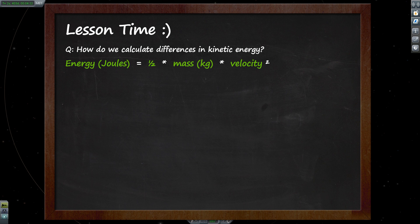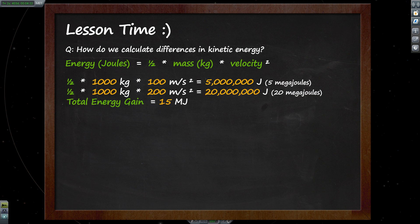So we'll take this as an example. We have a one-ton craft travelling at 100 metres per second, and we're going to accelerate it to 200 metres per second. First we need to work out the energy at our starting velocity and then take that away from the energy at our end velocity. Plugging in our numbers for starting velocity: one-half times 1,000 kilograms times 100 metres squared gives us 5 megajoules. Our end velocity of 200 metres per second gives us 20 megajoules. So with our addition of 100 metres per second, we've gained 15 megajoules in kinetic energy.